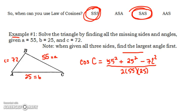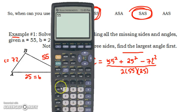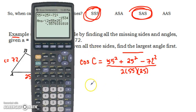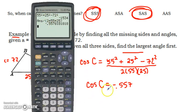This whole fraction, the easiest way to calculate this is to do this in a couple of steps. Take the numerator, 55² plus 25² minus 72², figure out what that number is, and divide it by 2 times 55 times 25. We get this negative decimal value, and we want to know what the cosine is. The cosine of C is equal to this number.